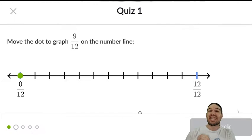Move the dot to graph 9 twelfths on the number line. One, two, three, four, five, six, seven, eight, 9 twelfths right there.